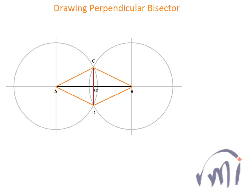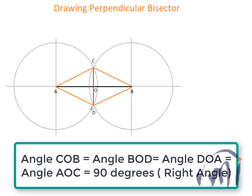If I call this intersection point O, then angle COB will be equal to angle BOD will be equal to angle DOA. And this will be equal to angle AOC and this will be equal to 90 degrees.